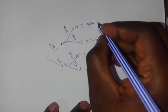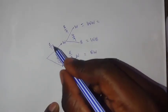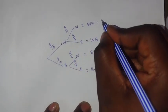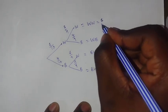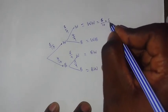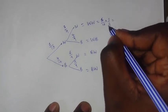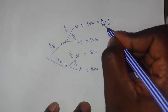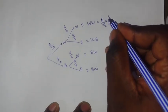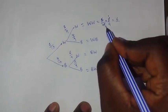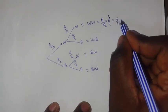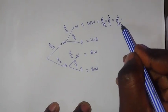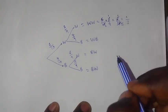From the tree diagram, for white-white, we multiply 6 over 10 times 5 over 9. You can reduce: 5 becomes 1 and 5 becomes 2... giving 6 over 18, which further reduces to 1 over 3.